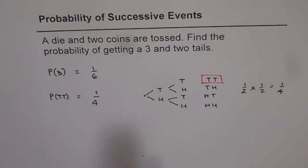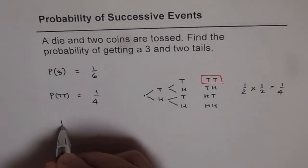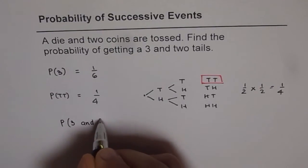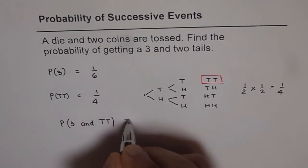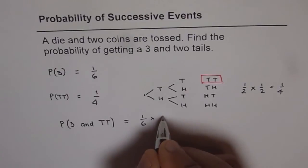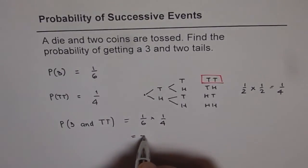It is a successive event. One event done after the other. So the probability of getting 3 and two tails is equal to product of these, which is 1/6 times 1/4, and that gives us 1/24.